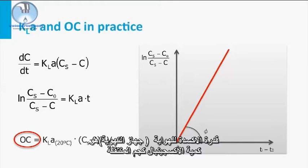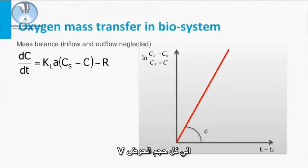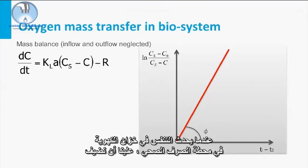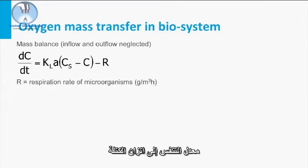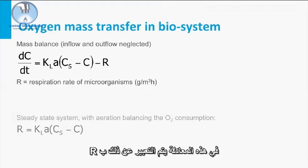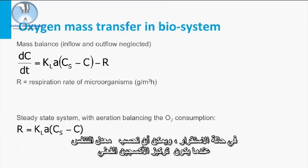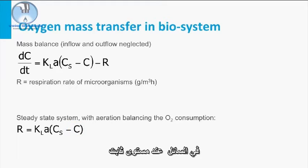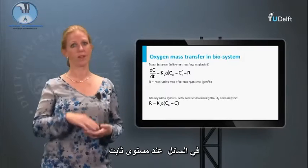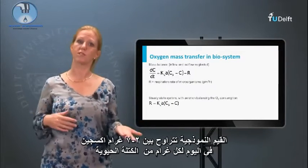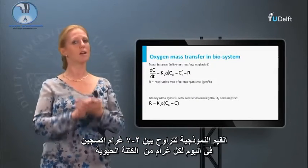The oxygenation capacity of the aerator is the quantity of oxygen in kilos transferred in the total tank volume V. When respiration occurs in the aeration tank of a sewage treatment plant, we have to add a respiration rate to the mass balance — expressed as R in this equation. In a steady state, the respiration rate can be calculated when the actual oxygen concentration in the bulk liquid is maintained at a constant level. Typical values vary from 2 to 7 gram oxygen per day per gram of biomass.